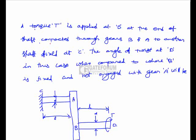A torque T is applied at D at the end of the shaft connected through gears B and A to another shaft fixed at C. The angle of twist at D in this case, when compared to where B is fixed and not engaged with gear A, will be. Here, gear A and gear B are fixed, and the pitch circle diameter of gear A is 100 mm and pitch circle diameter of gear B is 200 mm. So the torque applied on the shaft BD is 2 times the torque applied on CA.